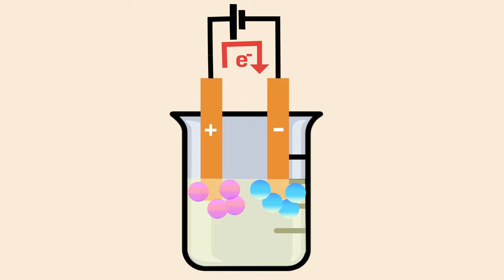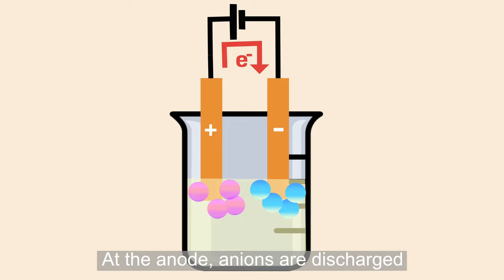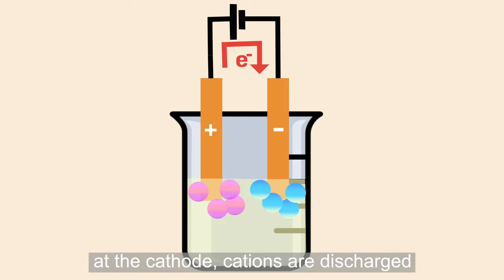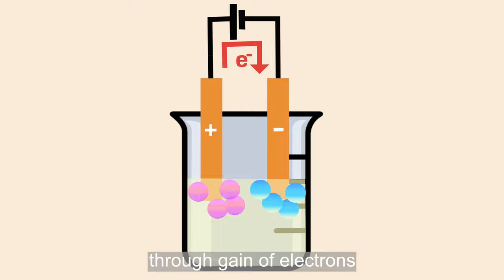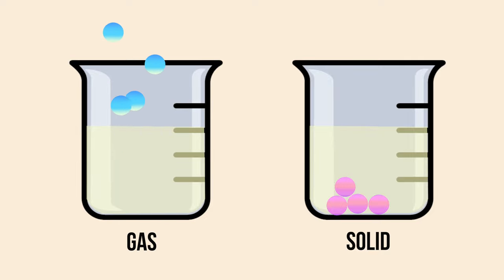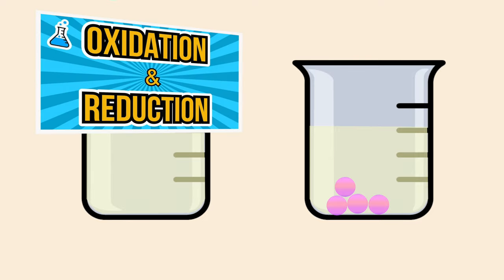This means that at the anode, anions are discharged through loss of electrons, while at the cathode, cations are discharged through gain of electrons. The neutral atoms, if solid, is deposited and if gas moves upwards. If you want to find out more about oxidation and reduction reactions, please watch my previous video, I'll post a link below.